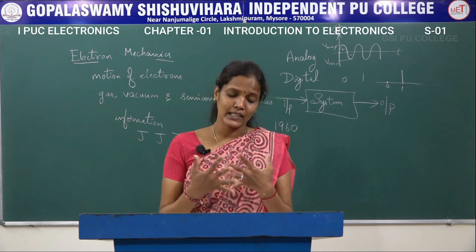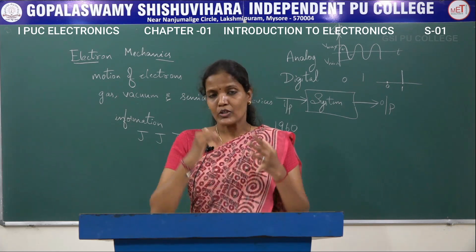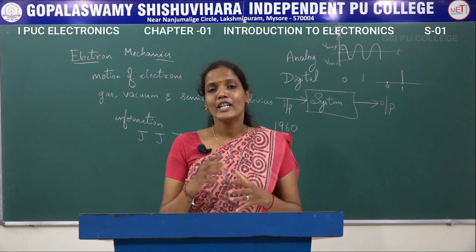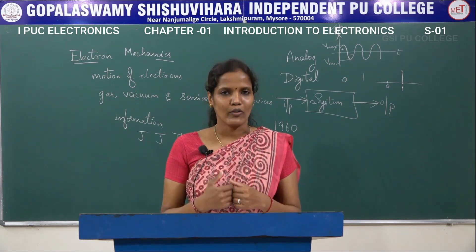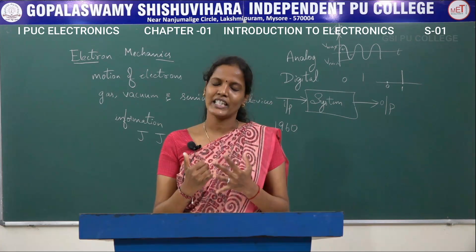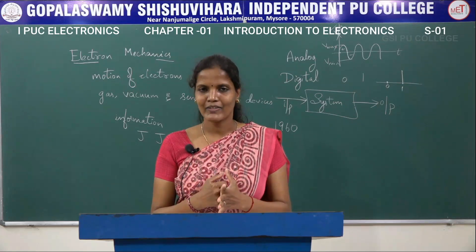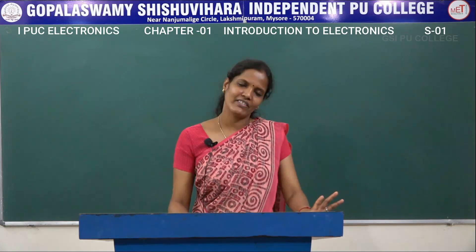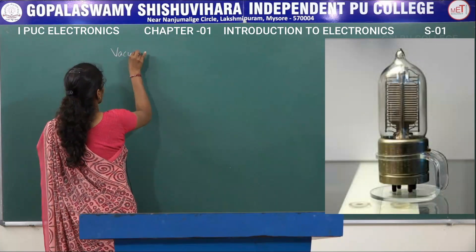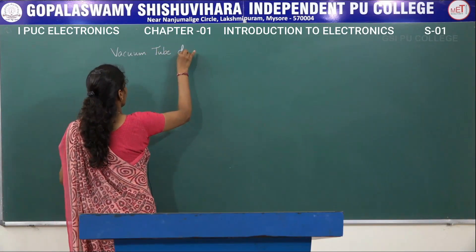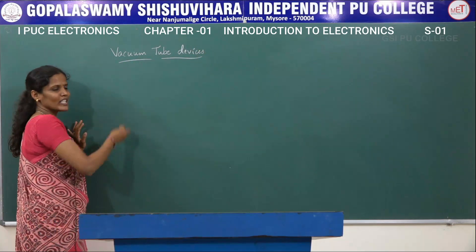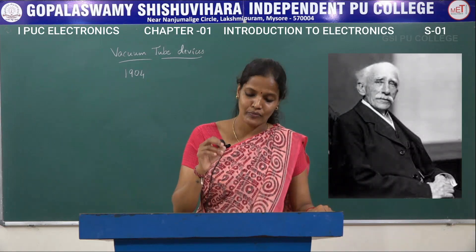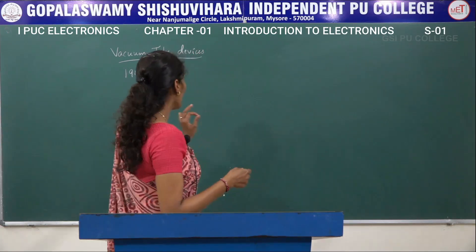We know many electronic devices — a computer, a mobile phone. An electronics engineer is able to understand the functioning of these devices and has the capability to improvise them according to user needs. Now let us discuss the development of electronics. The very first device invented was the vacuum tube diode. It began in the year 1904 when the scientist J.A. Fleming — John Ambrose Fleming — invented a device named the vacuum tube diode.